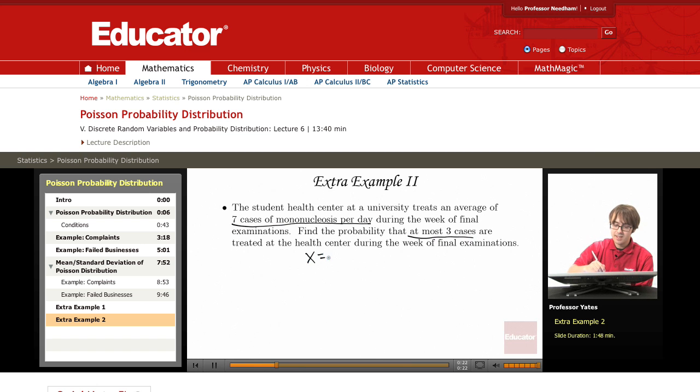So X is going to be the number of cases per day. Lambda, my parameter, is going to be seven per day. At most three. This means X is less than or equal to three.